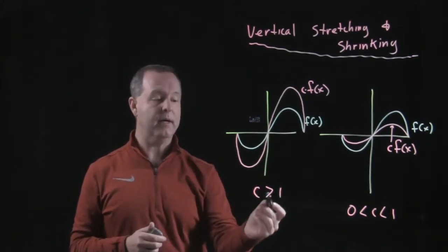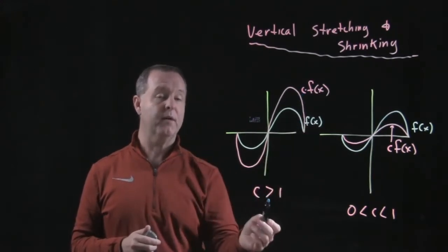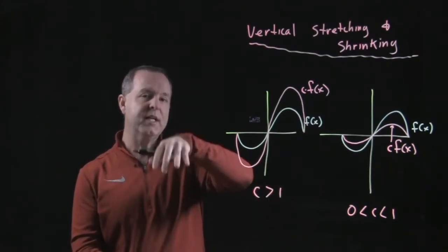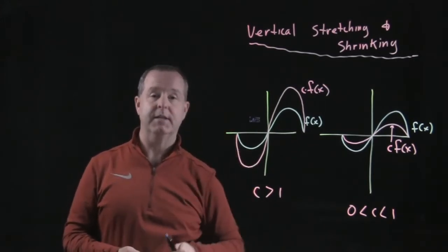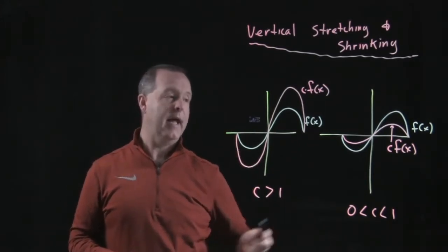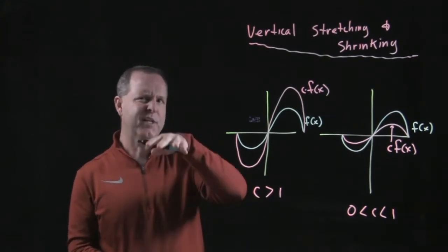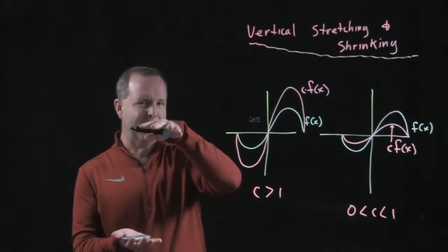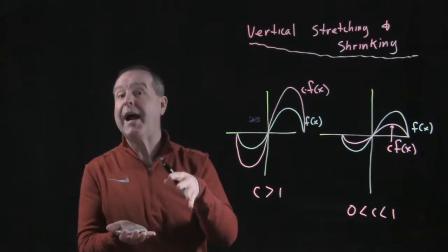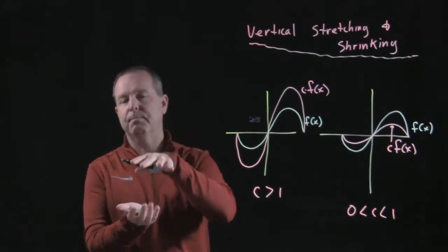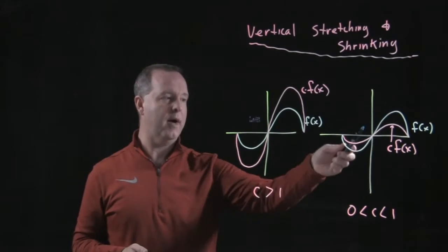The function multiplier c, if it's greater than 1, is stretching that function by a factor of c. Likewise, if c is between 0 and 1, it's shrinking it by a factor of c — a fractional amount, meaning the function becomes fractionally smaller.